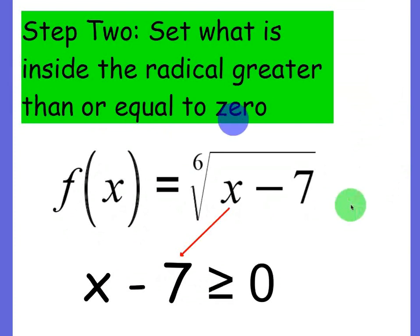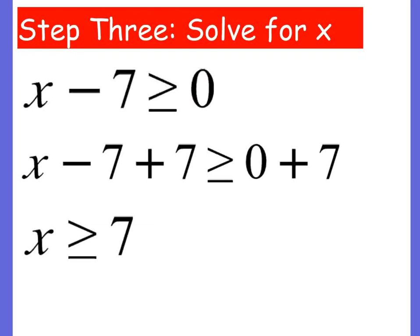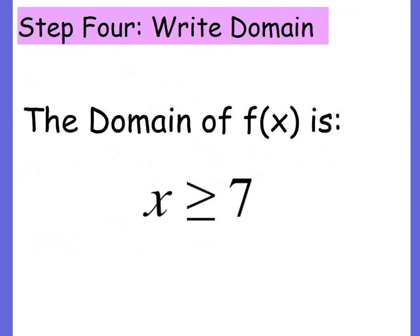We're going to take x minus 7, set it greater than or equal to 0, and solve. We add 7 to both sides and get x is greater than or equal to 7. That means we can plug in anything greater than or equal to 7 into the function and get something back. If we try to plug in anything less than 7, we will not get a result.